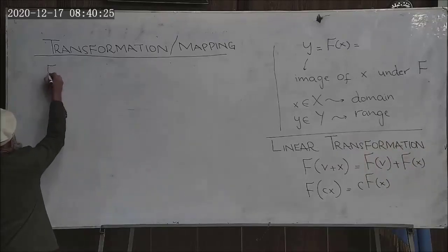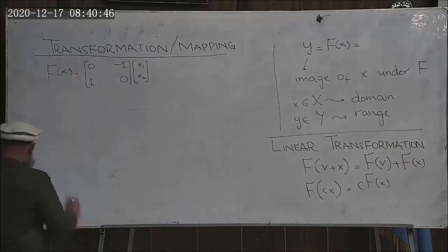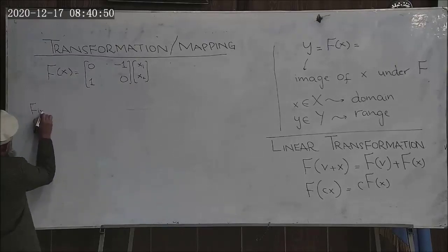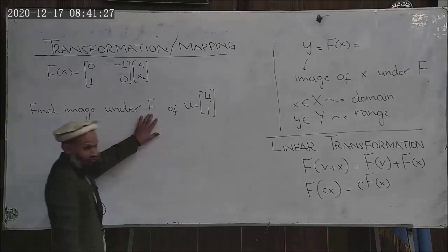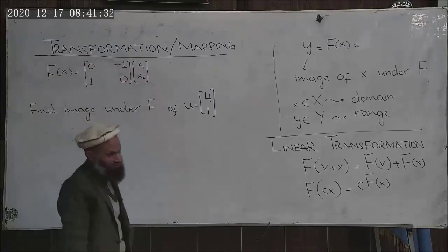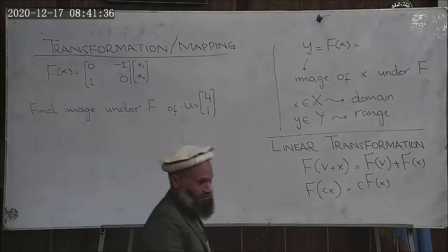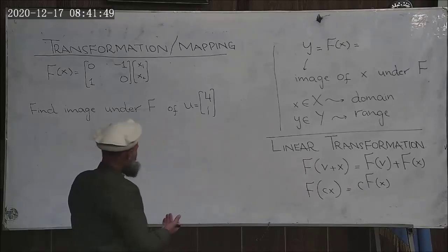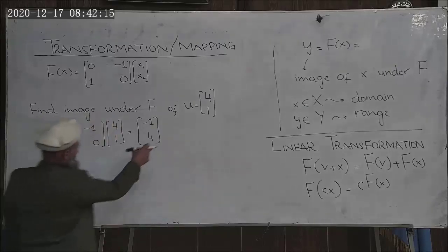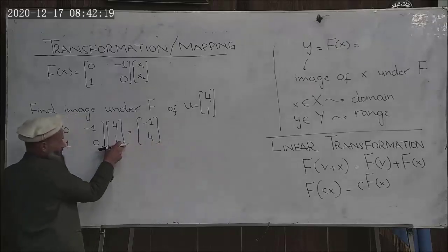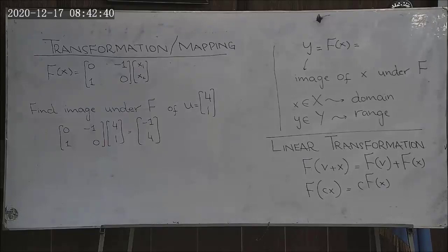Here is a transformation f(x). Find the image of these vectors under this transformation. The transformation f is given by a specific relation — please find the image of this vector under that particular transformation. You simply multiply this matrix by this vector, and the result is the image of that vector under this transformation.